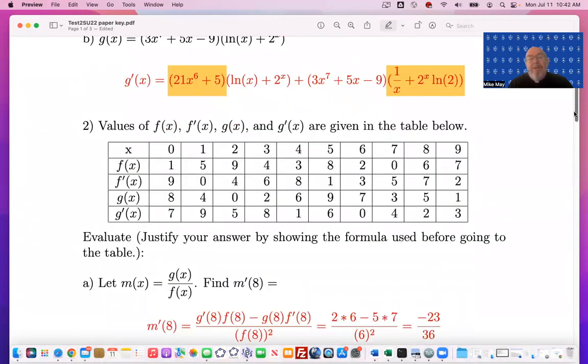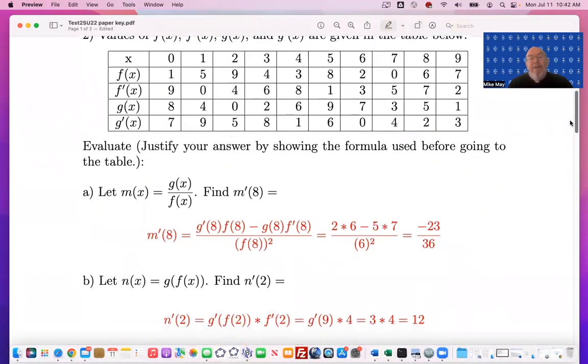For the second question, we're testing rules, but you don't have formulas to deal with, so you've got to just use the formula for product portion and chain rule. So the first part of the problem is setting up saying we have a quotient.